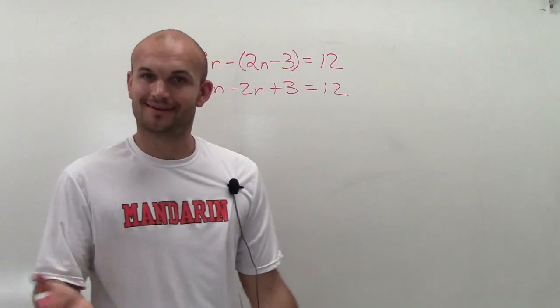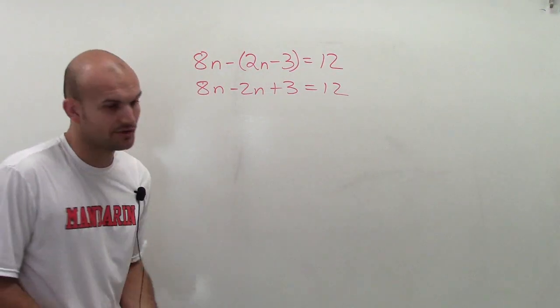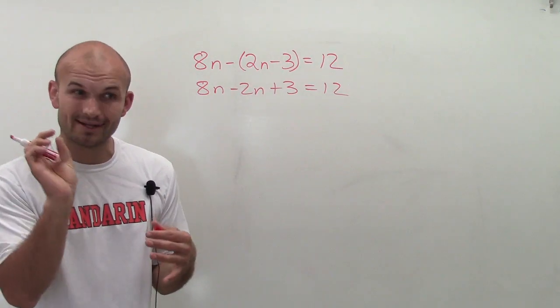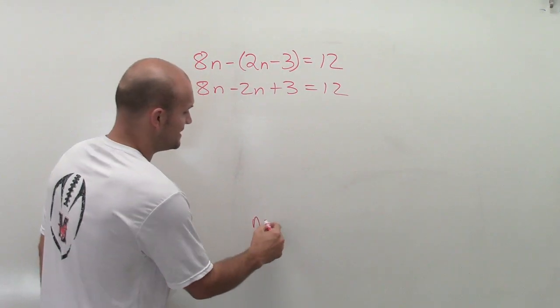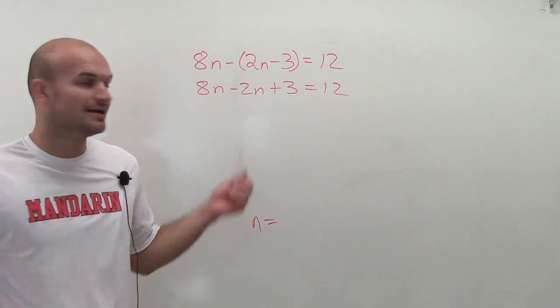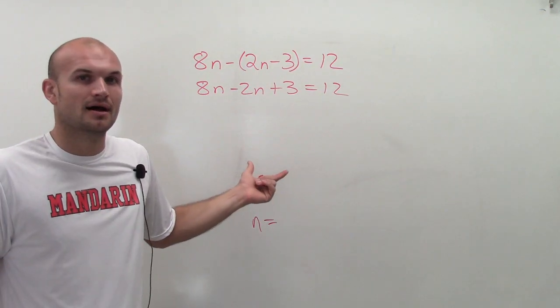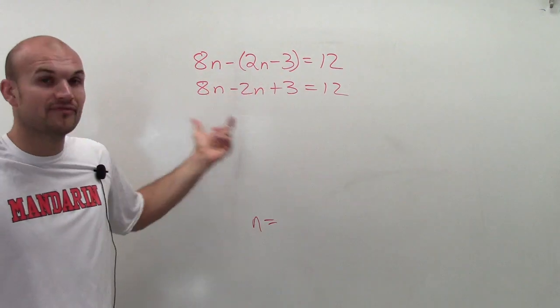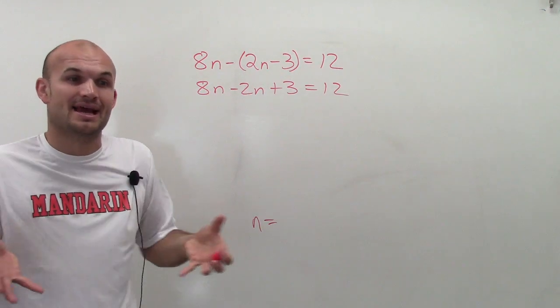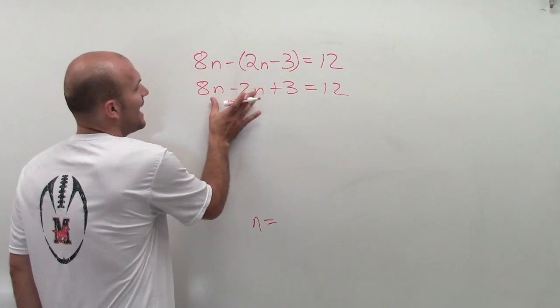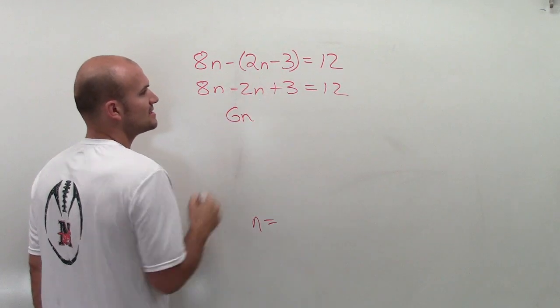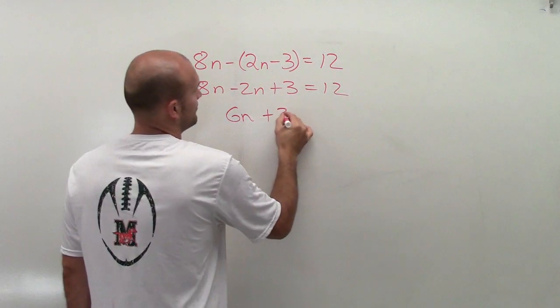Now we need to isolate our variable. Here I have two of these variables, but since they both have the n factor, I can combine them. They both have the same linear factors, so 8n minus 2n becomes 6n plus 3 equals 12.